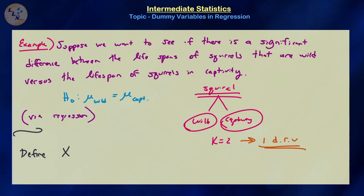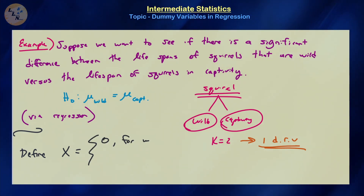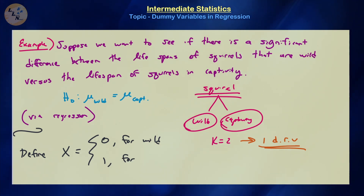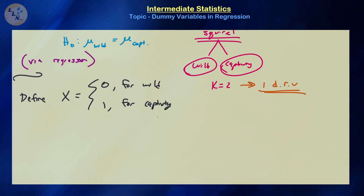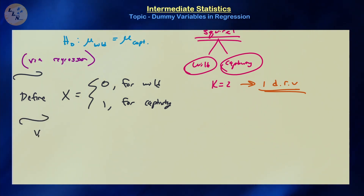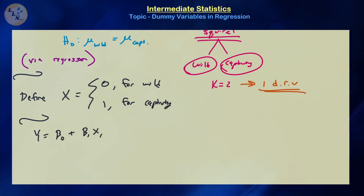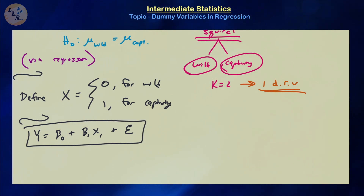Our equivalent linear regression model is y equals beta zero plus beta one x plus epsilon — again a simple linear regression model, so you can do this even without knowing multiple linear regression. Let's gather our data.